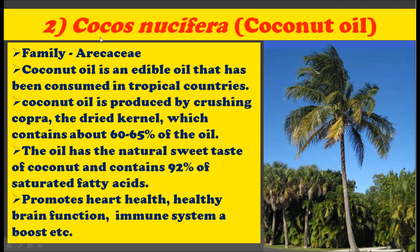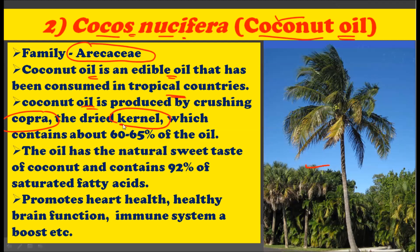The second plant is Cocos nucifera, commonly called the coconut tree. We are talking about coconut oil, the oil coming from Cocos nucifera. This plant belongs to the family Arecaceae. Coconut oil is an edible oil consumed in tropical countries. Coconut oil is produced by crushing the copra — the dried kernel — which contains about 60 to 65% oil. This oil has a very natural sweet taste and contains nearly 92% saturated fatty acids.